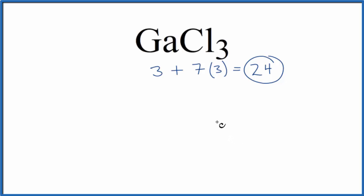We'll put the least electronegative element at the center. That's the gallium. So we'll put Ga at the center, and then we'll put three chlorine atoms around it.